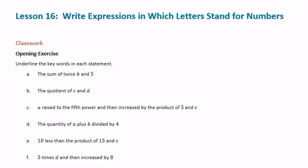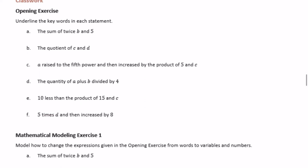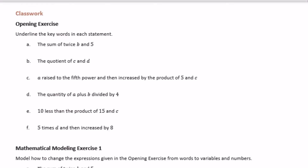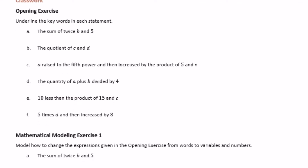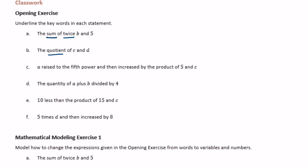6th grade module 4 lesson 16 classwork opening exercise: underline the keywords in each statement. We're looking for words that tell us whether we should be multiplying, dividing, adding, or subtracting. The sum of twice b and five — 'sum' and 'twice' are keywords. 'Twice b' means two times b, and 'sum' means we add. The quotient of c and d — 'quotient' tells us to divide.